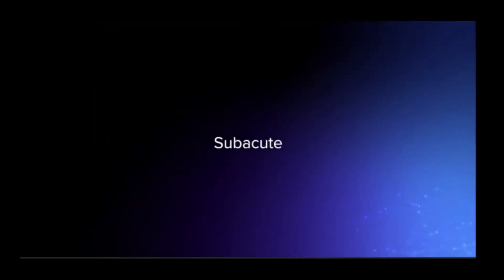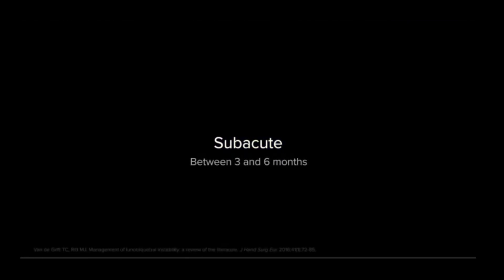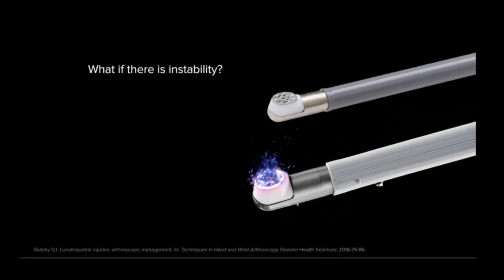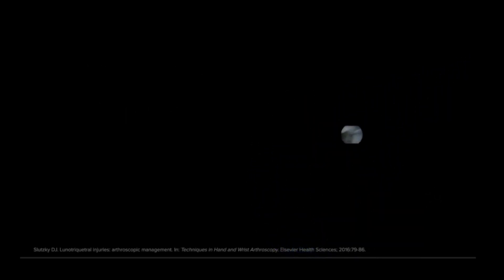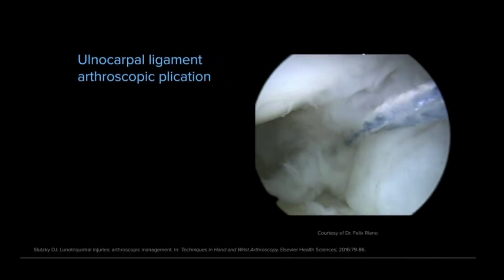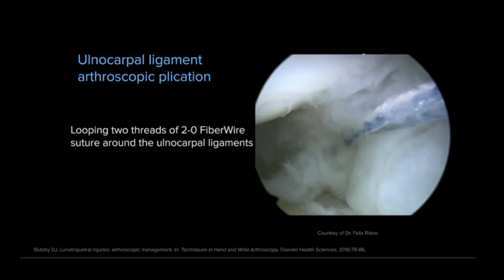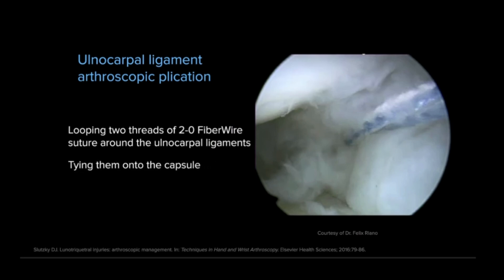Subacute lunotriquetral injuries are cataloged as those older than 3 months but that have not reached 6 months, which is the marker for chronicity of instability or dissociation. In the presence of instability as an active finding during arthroscopic evaluation, additional treatment options are available, such as capsular thermal shrinkage and arthroscopic plication or reefing of the ulnar carpal ligaments. This plication may be obtained by looping two threads of 2-0 FiberWire suture around the ligaments and tying them tight onto the capsule.